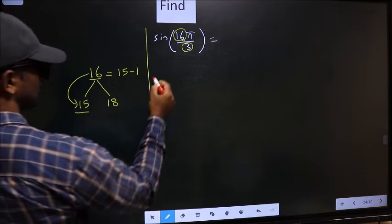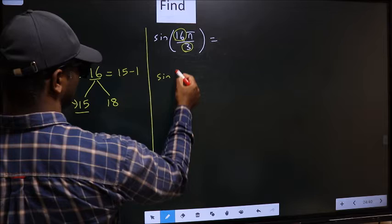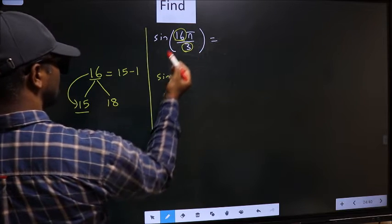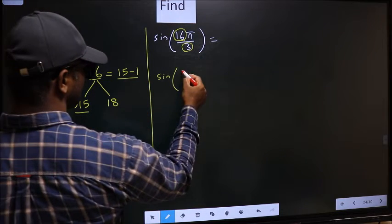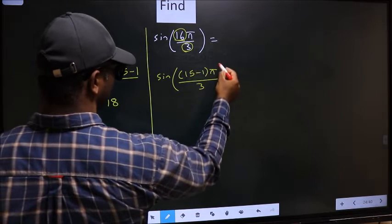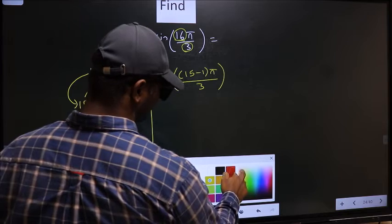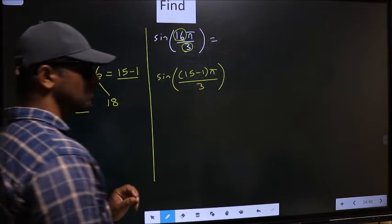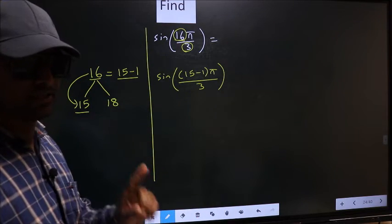So 16 should be written as 15 minus 1. So this will change to sin of, in place of 16, now you should write this: 15 minus 1 π by 3. This is your step 1.